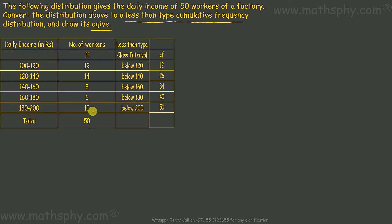Below 200, 40 plus 10, 50. Likewise, you see the last cumulative frequency is 50 and sum of all the frequencies that's also 50.